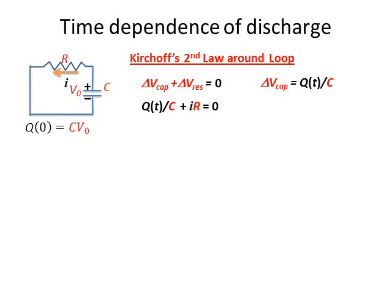We have two different quantities or two different variables, charge and current, in this equation. We would like to get the equation in terms of just one variable. We can remember that the current is equal to the time derivative of the charge, or dQ/dt. We can plug that into our Kirchhoff's second law and now we have an equation which just depends on Q and its time derivative. This is called a differential equation.